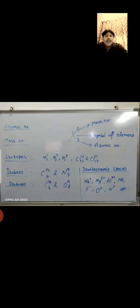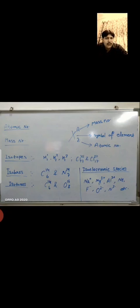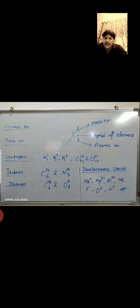The next topic is mass number. Mass number is the sum of the number of protons and neutrons present in the nucleus of an atom. As you can see on the screen, X is the symbol of an element. A at the top corner represents its mass number, and Z represents the atomic number. If you have both mass number and atomic number, you can simply calculate the total number of neutrons by subtracting the atomic number from the mass number.